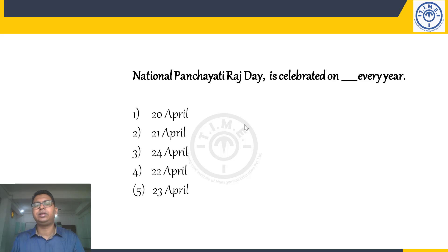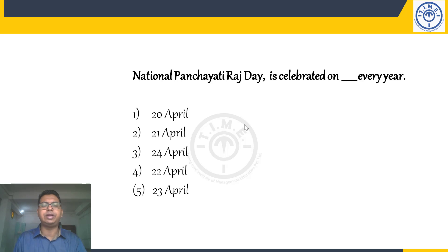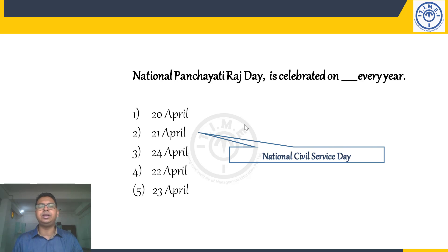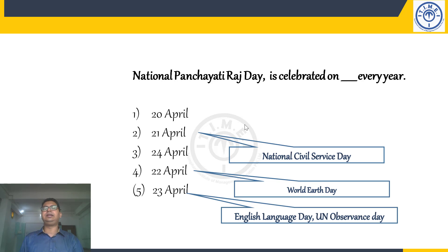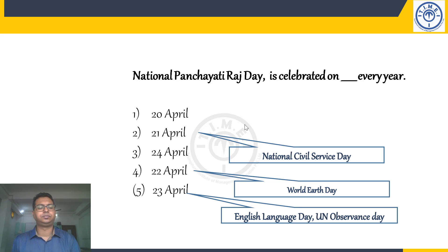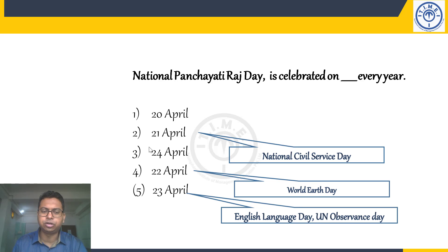National Panchayati Raj Day is celebrated on 24th April every year. National Civil Service Day is 21st April. 22nd April is World Earth Day, and 23rd April is English Language Day — a UN Observance Day. The answer is 24th April, option 3.